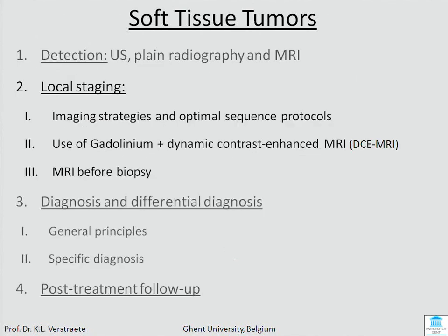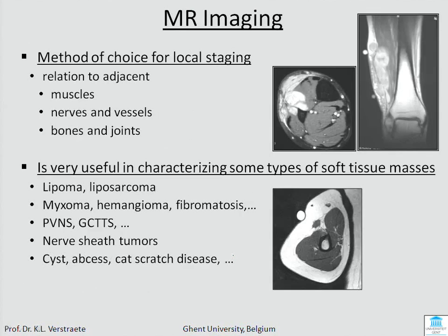For local staging, I will show imaging strategies, use of gadolinium, and give suggestions for biopsy. MR imaging is very good for soft tissues because you see the relation of the tumor to the muscles, nerves, vessels, and joints, and in some types of tumors you can make a specific diagnosis.